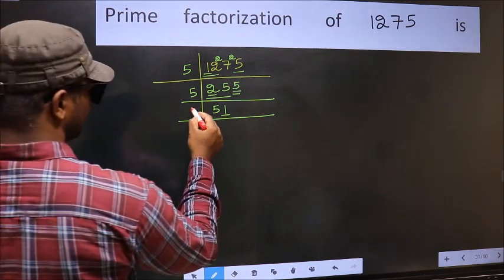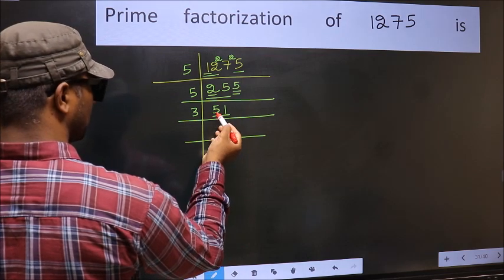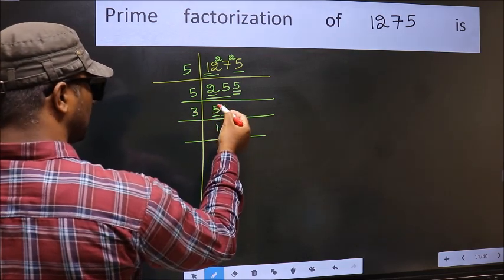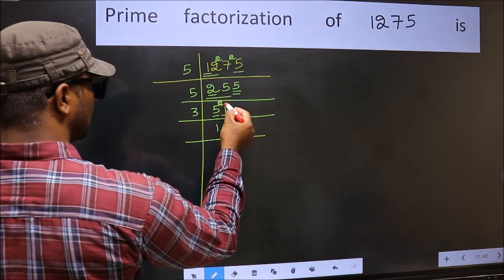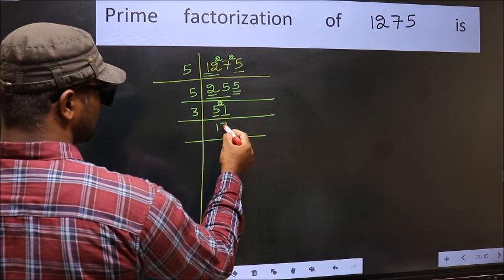First number is 5. A number close to 5 in the 3 table is 3×1=3. 5-3=2, carry forward 21. When do we get 21 in the 3 table? 3×7=21.